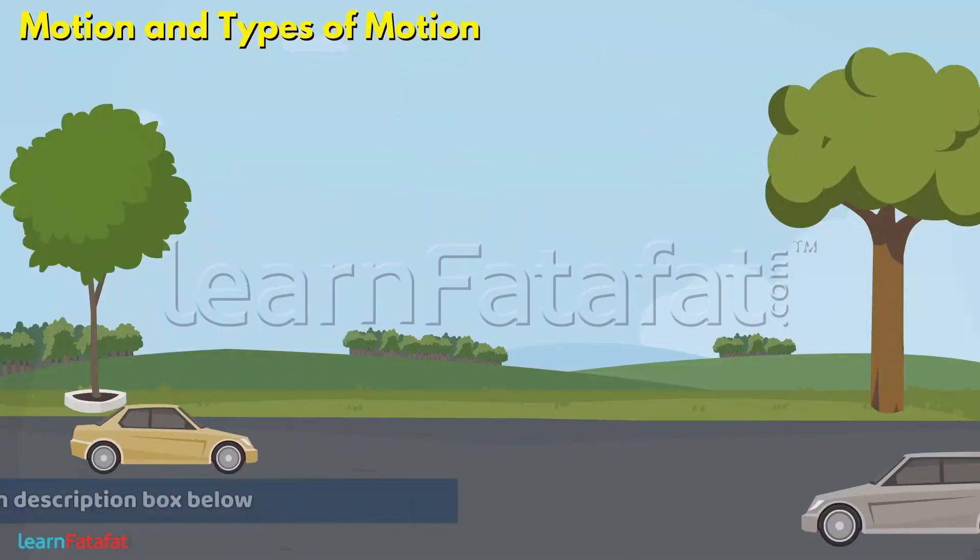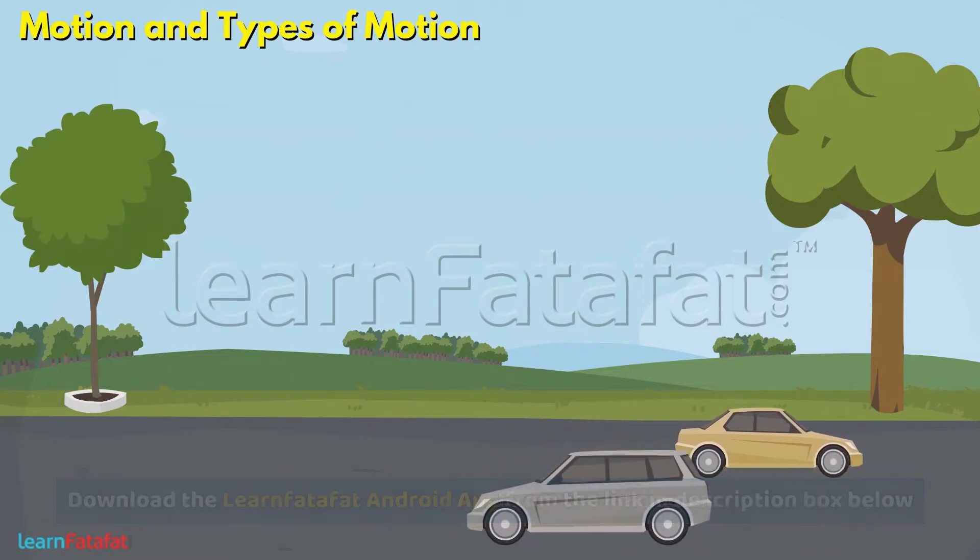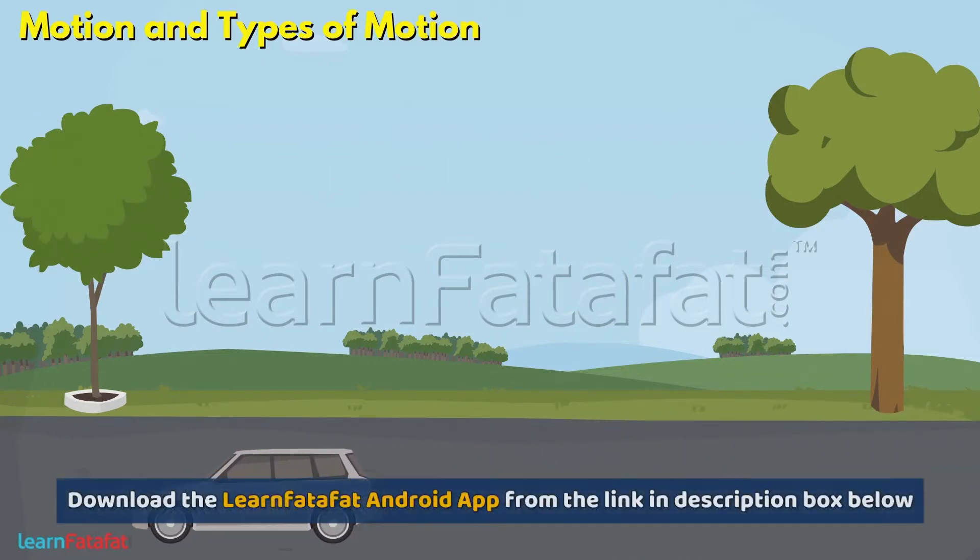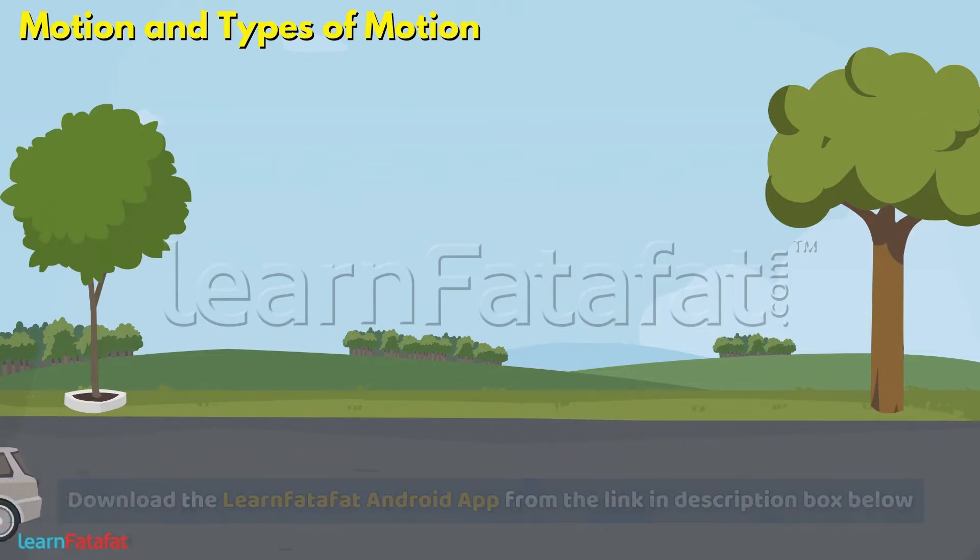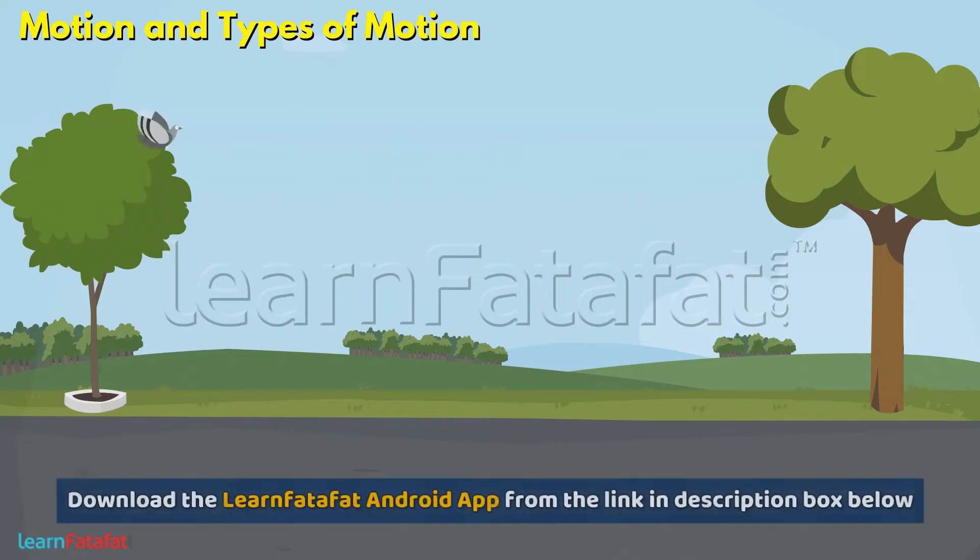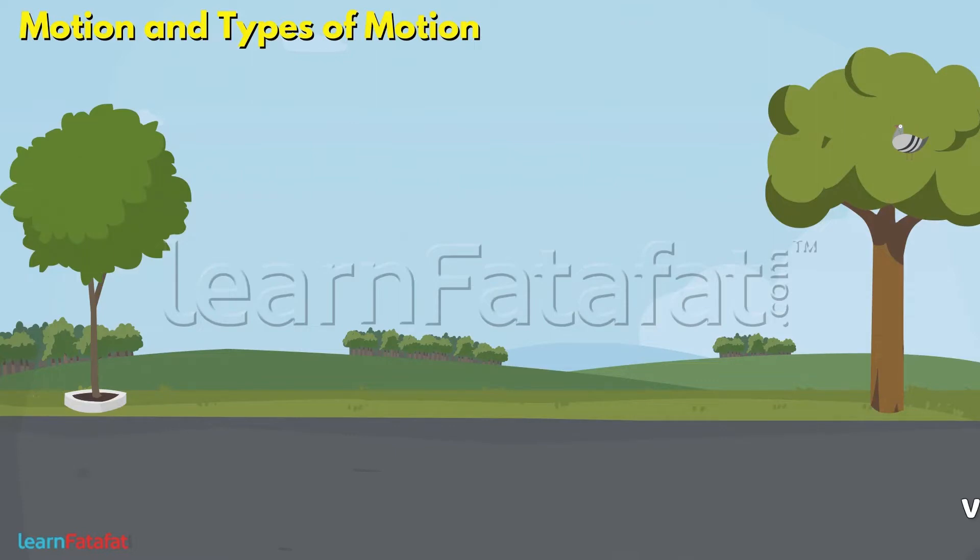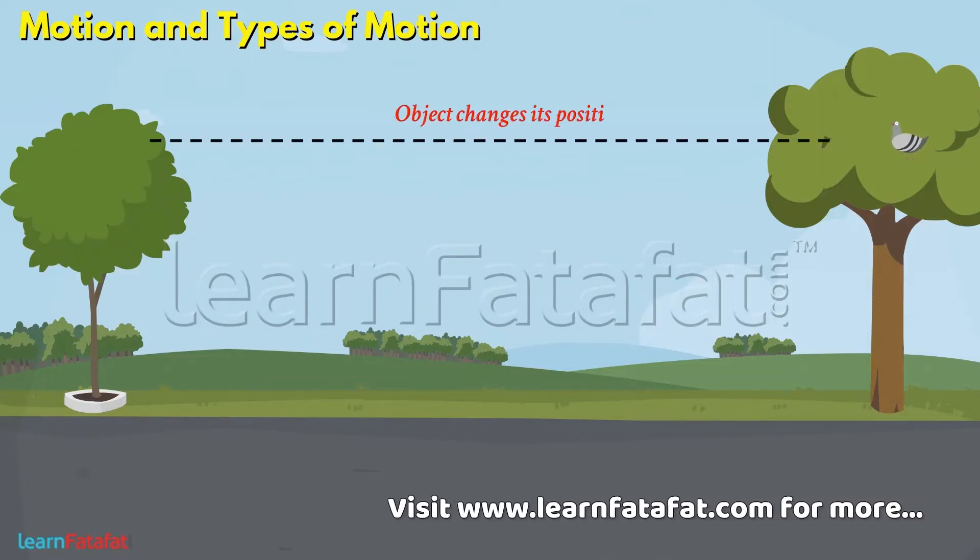There are various things around us. Some of these are moving while others remain at the same place. For example, the birds go from one tree to another while the trees remain at the same place. When an object changes its position, it is said to be in motion.